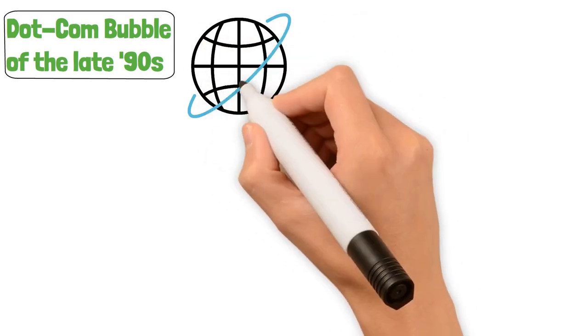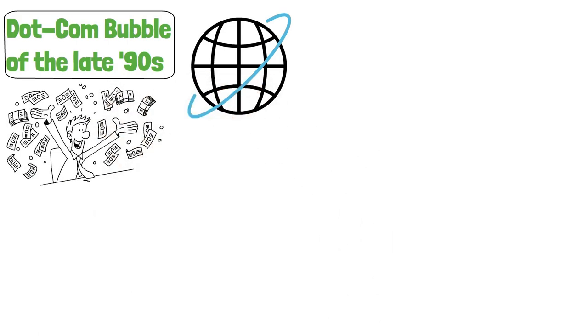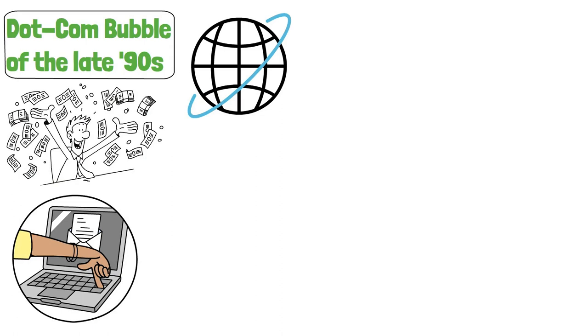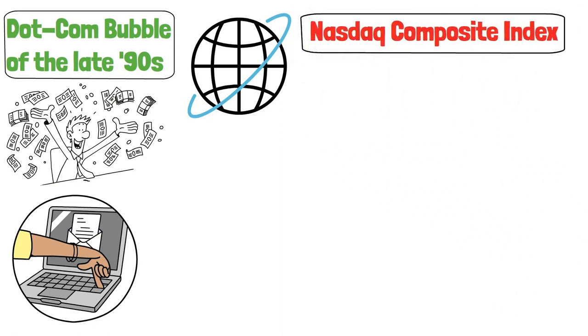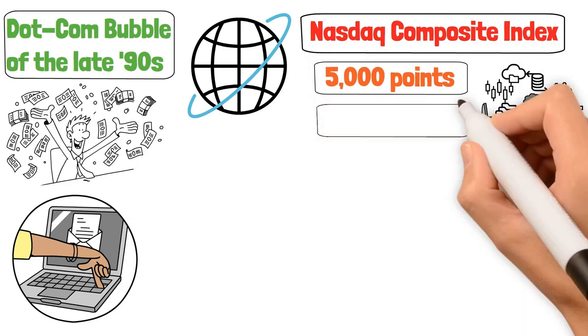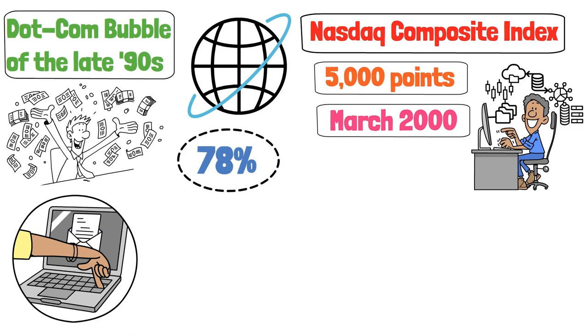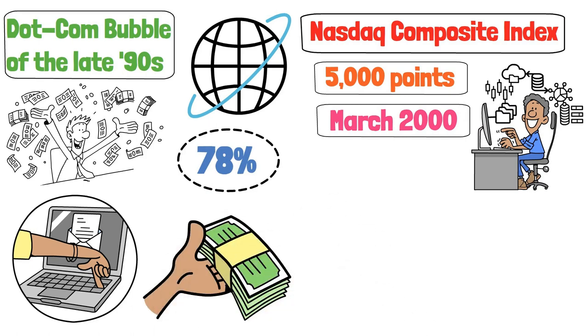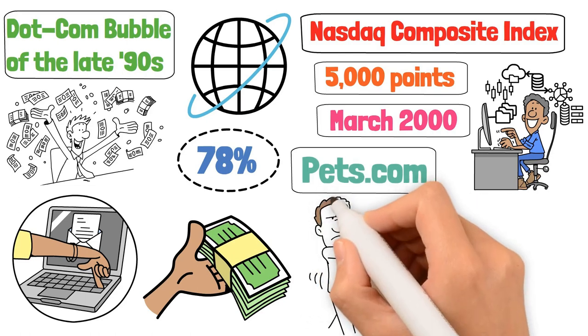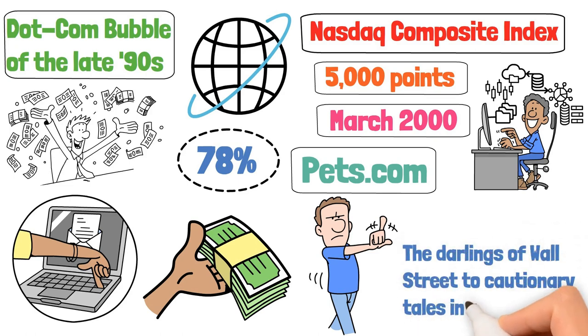Next on our list of financial flops is the dot-com bubble of the late 90s. Ah, the era of dial-up internet and funky websites with flashing GIFs. It was a time when investors were throwing money at any company with a dot-com in its name faster than you could say, you've got mail. During its peak, the NASDAQ composite index, which was heavily weighted with tech stocks, reached a staggering 5,000 points. However, when the bubble burst in March 2000, the index plummeted by a whopping 78% over the following two years, erasing trillions of dollars in market value. Companies like Pets.com, which famously spent millions on advertising but never turned a profit, went from being the darlings of Wall Street to cautionary tales in record time.